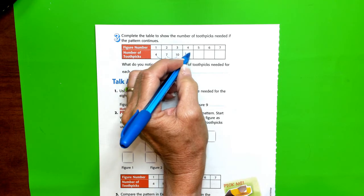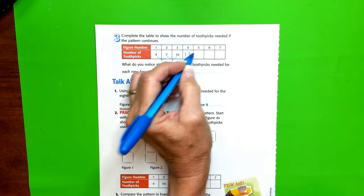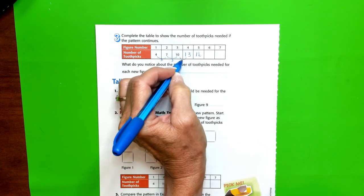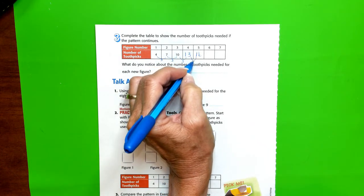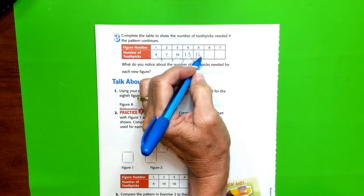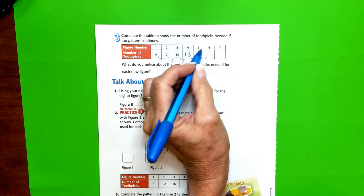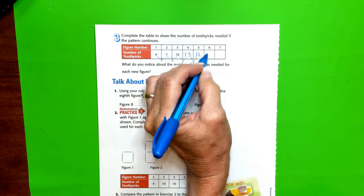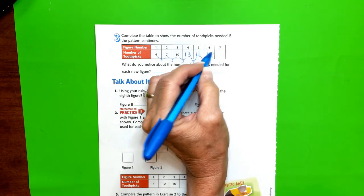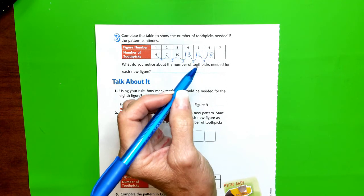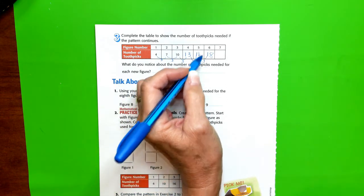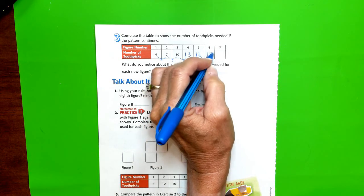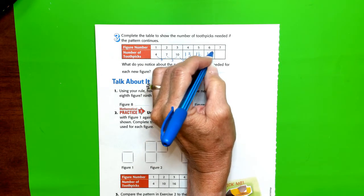And then our fifth figure, we had 16, didn't we? So is our pattern continuing? It is. We can assume that for our next figure we would have 3 more, so that would be 18. And for our next figure—oops, excuse me, 16, 17, 18, 19—my bad, 19.